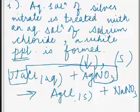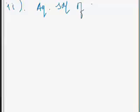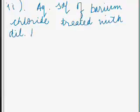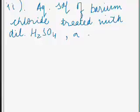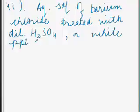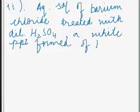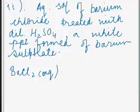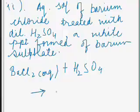Let us take another example. When an aqueous solution of barium chloride is treated with dilute sulfuric acid, a white precipitate of barium sulfate is formed. The chemical equation: BaCl2 (aq) reacts with H2SO4 (aq) and produces BaSO4, which is the white precipitate (s).